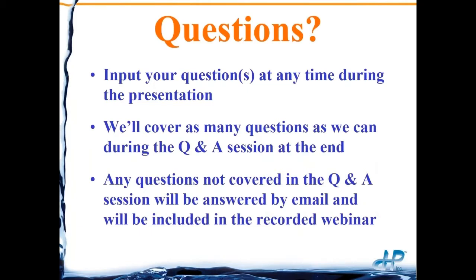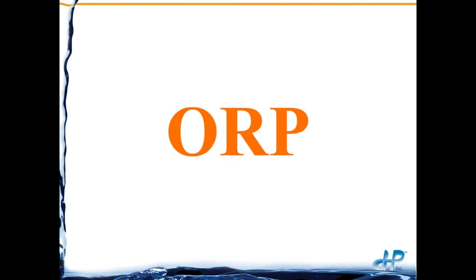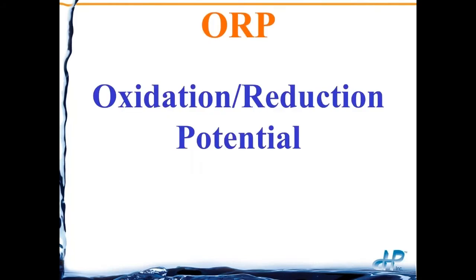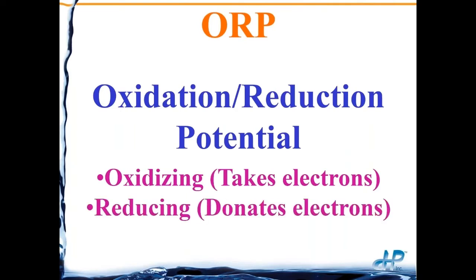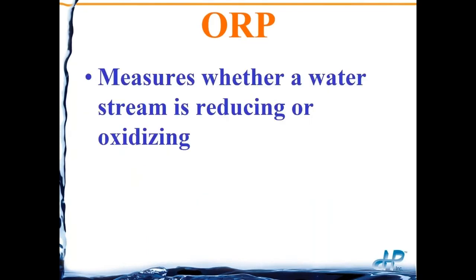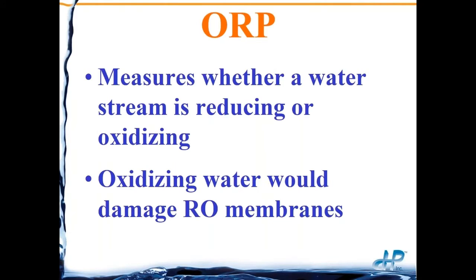ORP stands for Oxidation Reduction Potential. We're talking about oxidation — where we're taking electrons — and the opposite, reduction or reducing, where we're donating electrons. An ORP measurement will tell us whether a water stream is reducing, meaning it wants to give up electrons, or oxidizing, meaning it wants to take electrons.